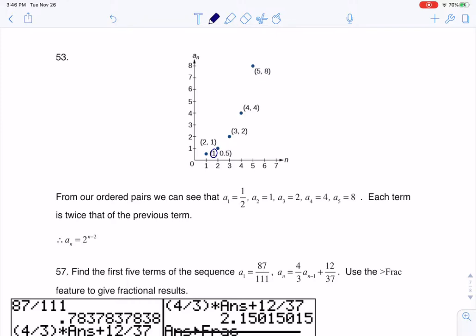So a sub 1 is equal to 0.5, which is why you see that term written out that way. If you see here, a sub 2 is equal to 1, which is why you see me writing that term, right?